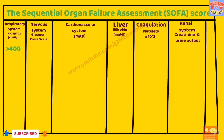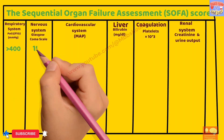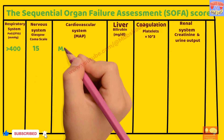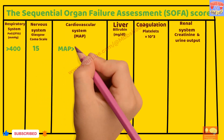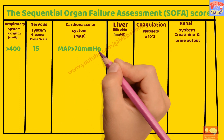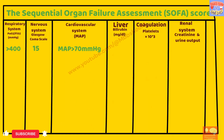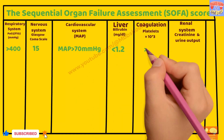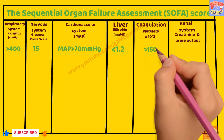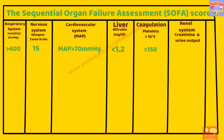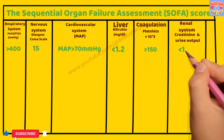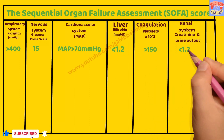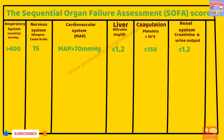A patient whose PF ratio is more than 400, Glasgow Coma Score 15, mean arterial pressure more than 70 mmHg, bilirubin less than 1.2, platelet count more than 1,50,000, and creatinine less than 1.2 will have a SOFA score of 0.